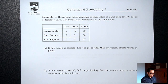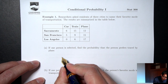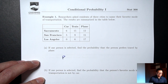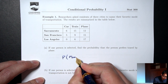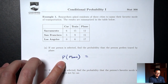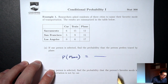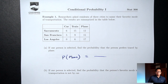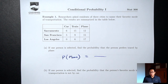Part A: if one person is selected, find the probability that the person prefers travel by plane. In symbols, what I'm looking for here is P of plane — probability of plane. The bottom number is going to be the number of things in our sample space. Here we're picking a random person, so the sample space is just a list of everybody that could be picked.